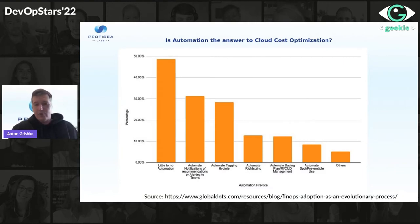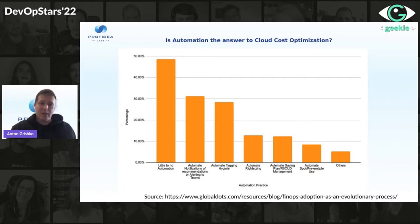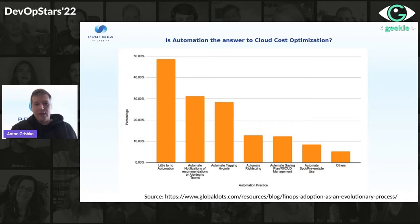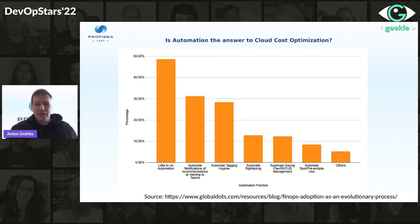You might think that cloud cost is always about automation — we can simply automate everything to optimize cost, which is true from one side. But based on this graph, almost half of companies are not automated at all, with no automation whatsoever. It means that half of companies have no automation, and it will take a long time to automate while they're already spending a ton of money on their clouds.